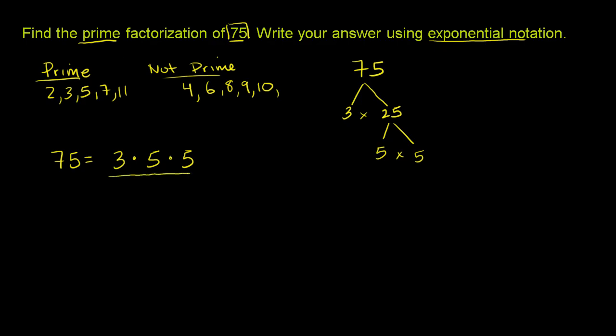But they want us to write our answer using exponential notation. So that just means if we have repeated primes, we can write those as an exponent. So what is 5 times 5? 5 times 5 is 5 multiplied by itself 2 times. This is the same thing as 5 to the second power.